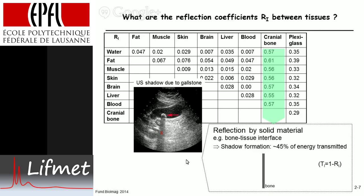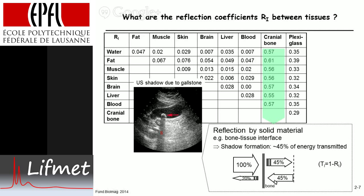Here's the gallbladder with a gallstone. The ultrasound source is up here. The gallstone is solid material, so a lot of the wave energy is reflected — the amplitude is high and it shows up as a very high signal. But this energy is missing below, and so you get shadow formation behind the gallstone, where you lose intensity and therefore the ability to detect lesions. Taking the example of bone: with an incoming wave at 100%, only 45% goes through. Assuming perfect reflection at the boundary, 45% comes back, but again only 45% passes back through the bone, so you end up with only about 20% of the signal — and that's why you get this shadow.